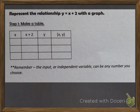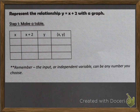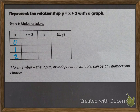Represent the relationship y equals x plus 2 with a graph. Before we can get to the graph, we need to make a table. So our rule is x plus 2, y equals x plus 2. The input or the independent variable can be any number we choose. I'm going to choose the three smallest positive numbers I can think of, which are 0, 1, and 2, and fill those into the x column.